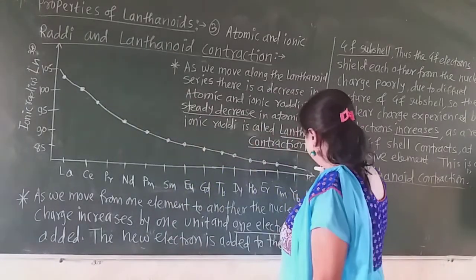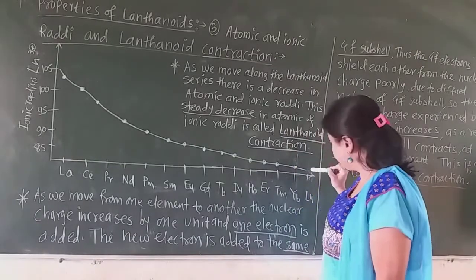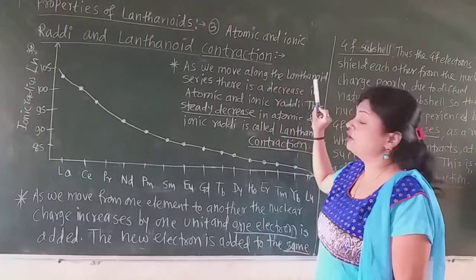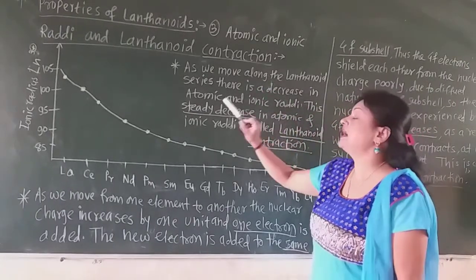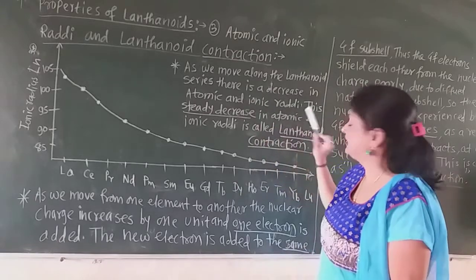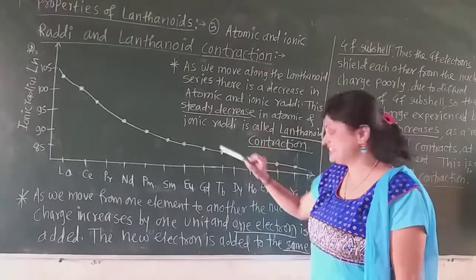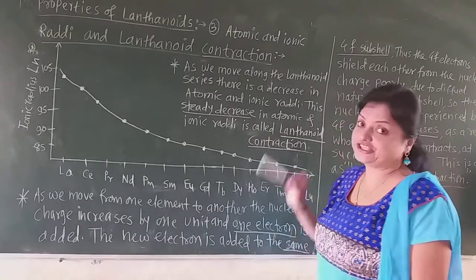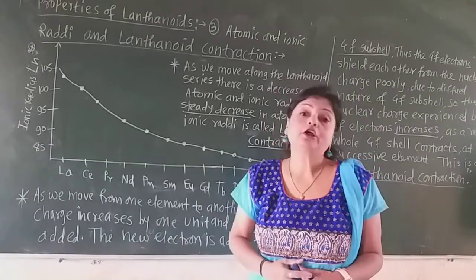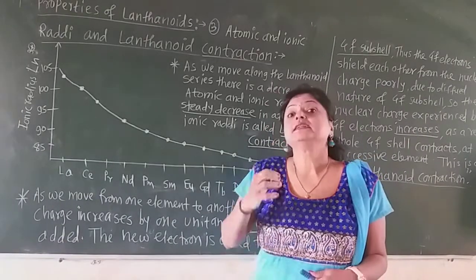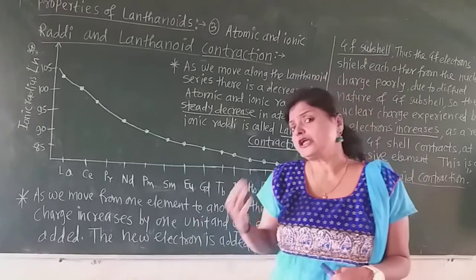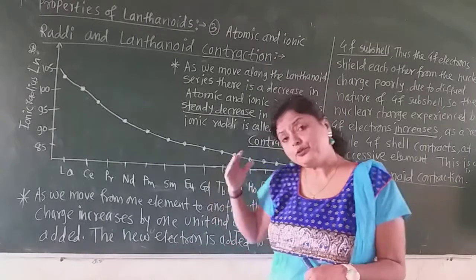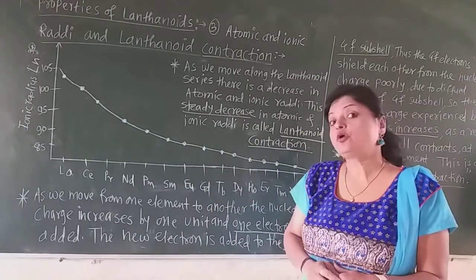Finally in lutetium it obtains the lowest value. As we go along the lanthanoid series there is a decrease in atomic or ionic radii. This steady decrease in atomic and ionic radii is called the lanthanoid contraction. Lanthanoid contraction is nothing but the steady decrease in atomic or ionic radii in the lanthanoid series from lanthanum to lutetium.